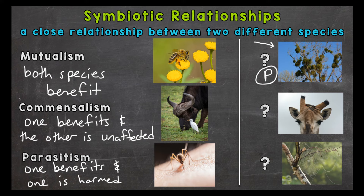Next we have a giraffe and an oxpecker. The oxpecker is sitting on top of the giraffe's head in our example picture. The oxpecker eats ticks and other parasites on the giraffe, so it benefits from being on the giraffe. The giraffe also benefits because the ticks and other parasites are taken care of. So both species benefit and this is going to be mutualism.